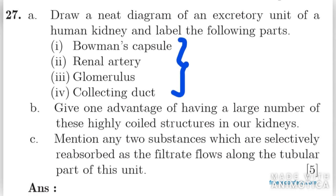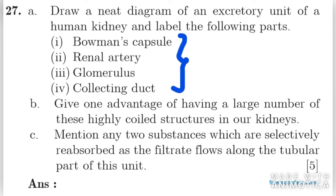Then you have to give one advantage of having a large number of highly coiled structures in our kidney. This question carries one mark for B part. You can write that this helps in increasing the surface area for filtration and proper reabsorption of useful substances.